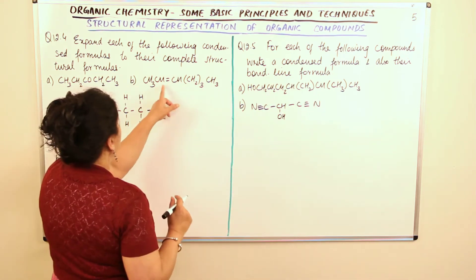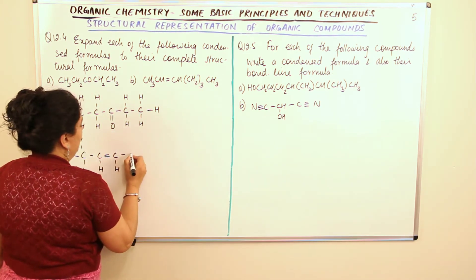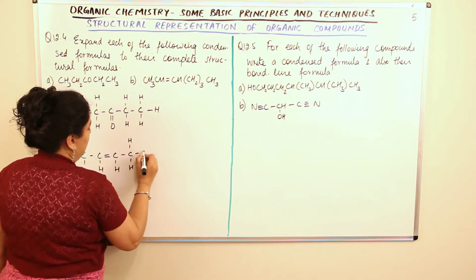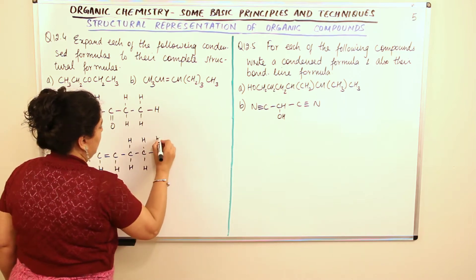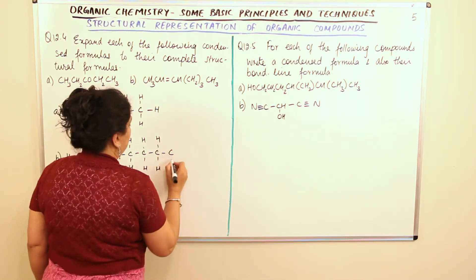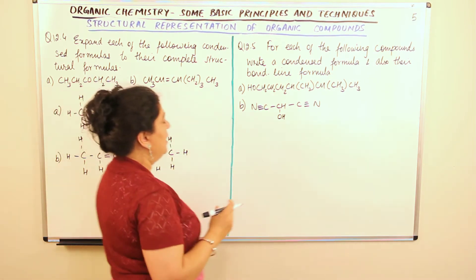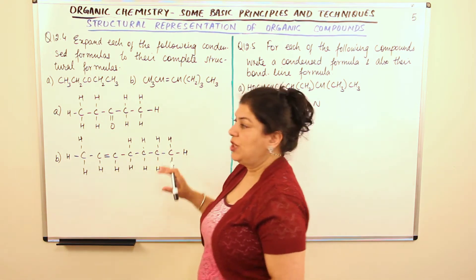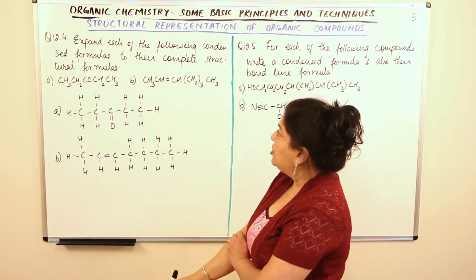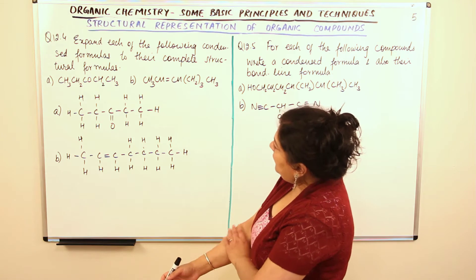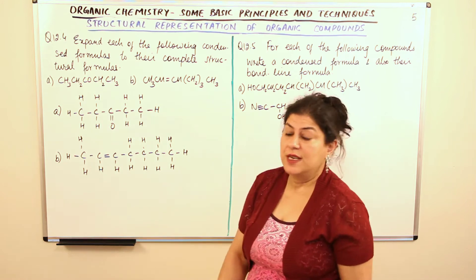Carbon forms a double bond here with CH, and then you have CH2 three times. So you have carbon, H, H, C, H, H, C, H, H — thrice — and CH3. This is the terminal carbon, therefore it has three hydrogens. These three carbons were in the chain, so in the condensed formula you can put a bracket and put the number of times it is being repeated — so it was (CH2)3. So we have expanded each of the condensed formulas to their complete structural formulae for both compounds.